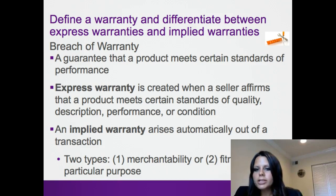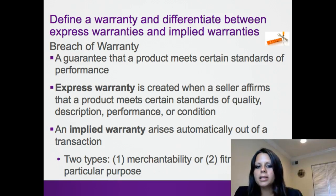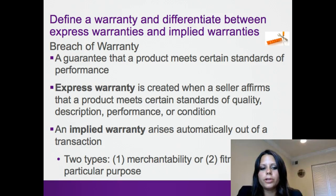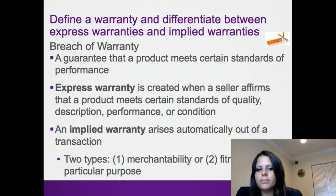A breach of warranty is a guarantee that a product meets certain standards of performance that has been broken. Businesses provide warranties generally in two ways. An express warranty is where you affirm that a product meets certain quality standards, describing the performance and condition — many businesses provide a one-year or two-year warranty that expressly describes what it entails. An implied warranty is a little different — it arises automatically out of a transaction. There's implied warranty of merchantability, meaning the product is reasonably fit for its ordinary use, and fitness for a particular purpose, meaning the product is fit for some specific use. Whether or not the company expressly states that warranty, this implied one can still apply.